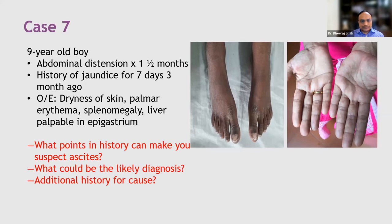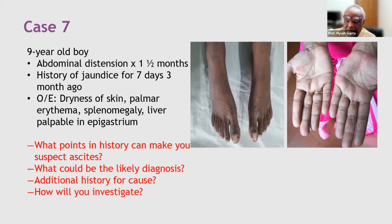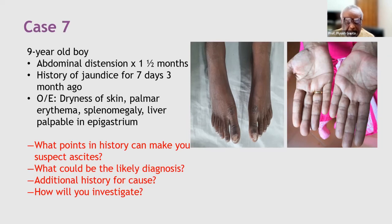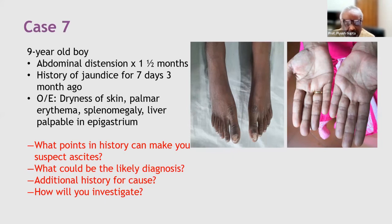The next step is investigations — investigations for liver dysfunction, for complications, and for etiology. Student responses include: ultrasonography, upper GI endoscopy mainly for complications like varices, viral markers for cause such as HBsAg and anti-HCV, PT, APTT, and INR for liver dysfunction, Doppler abdomen, and total protein and serum albumin.